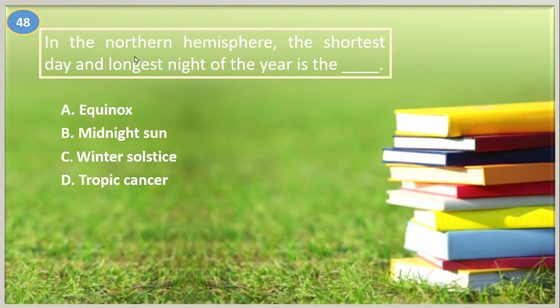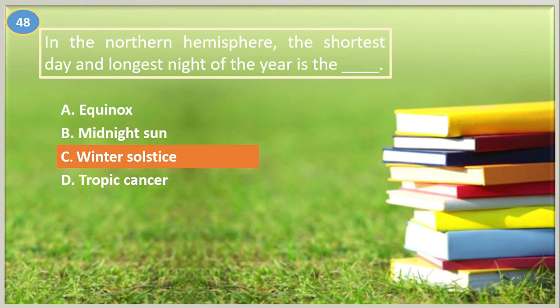Number forty-eight. In the northern hemisphere, the shortest day and the longest night of the year is the: A. Equinox, B. Midnight sun, C. Winter solstice, D. Tropic concert. The answer is letter C, Winter solstice. This marks the shortest day and the longest night of the year.